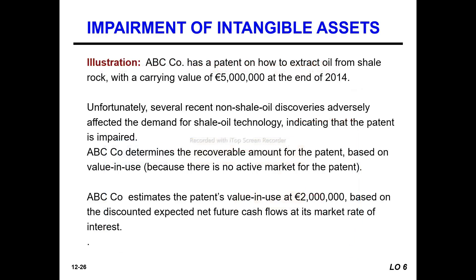Assume ABC Company has a patent on how to extract oil from shale rock with a carrying value of 5 million dollars. Unfortunately, several recent shale oil discoveries adversely affect the demand for shale oil technology. These are the indications that the patent is impaired — it adversely affects the oil technology.